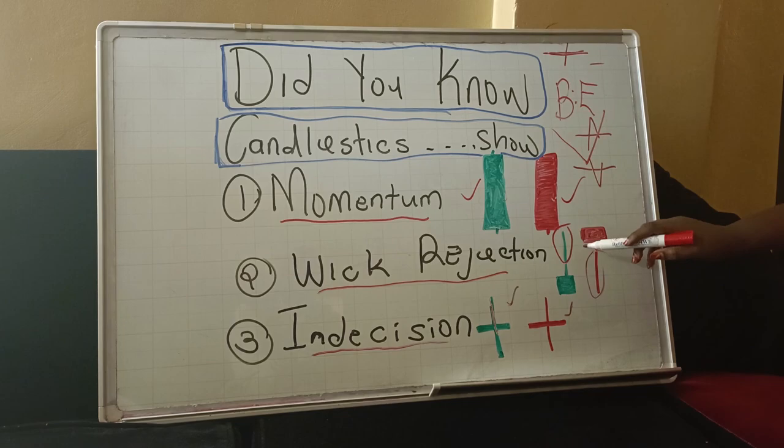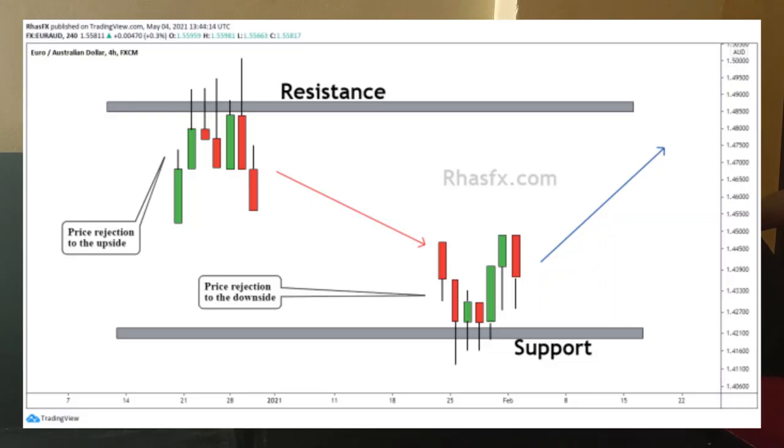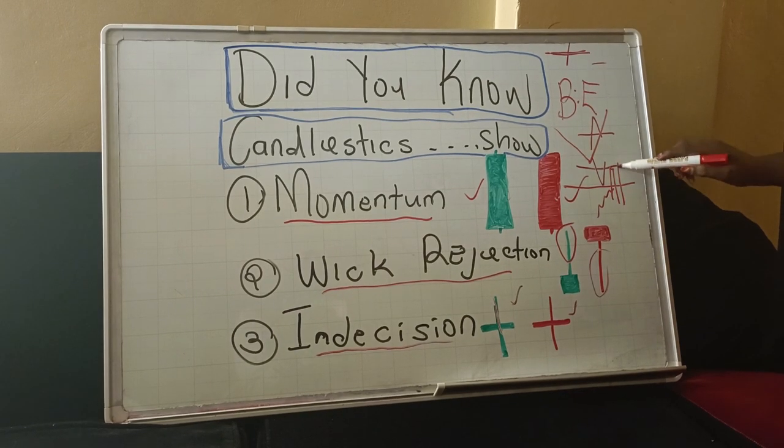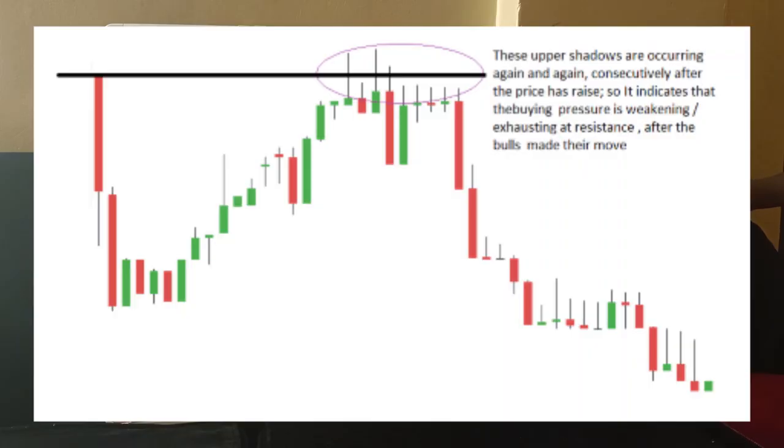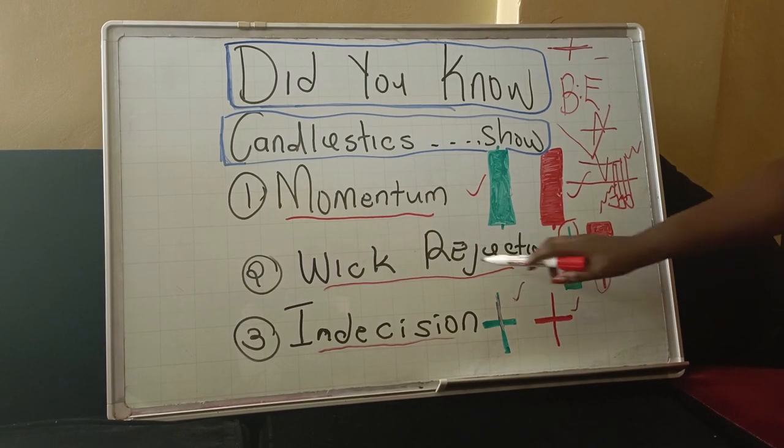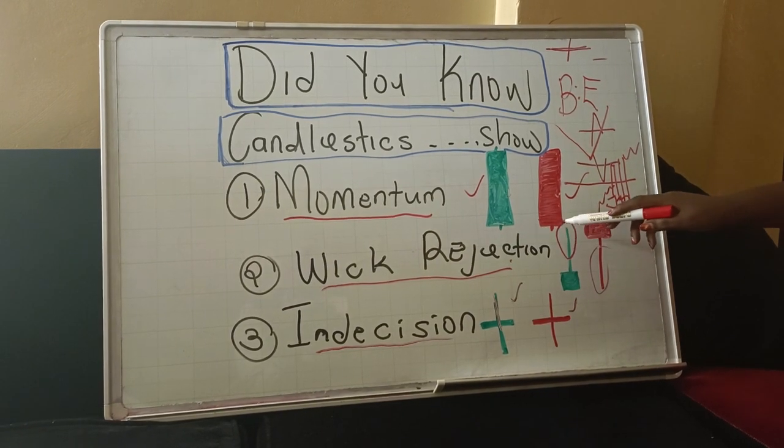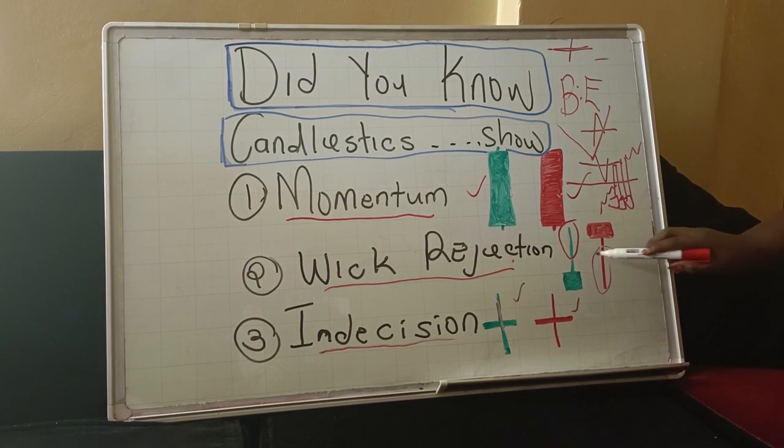Weak rejection candle, mostly they are seen on a market that has been trending and then it finds a resistance and then it starts pushing and then leaving the wicks. So the minute you see these wicks, the market is getting rejected. And that's why we say weak rejection. And weak rejection, I have drawn two candles.